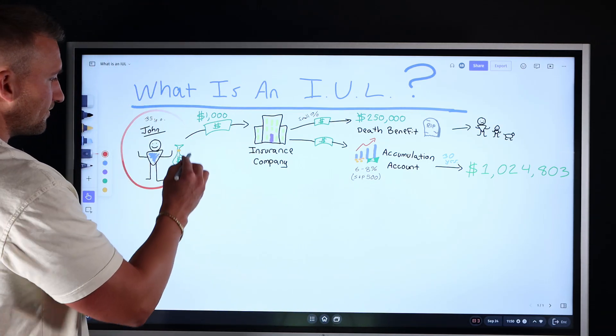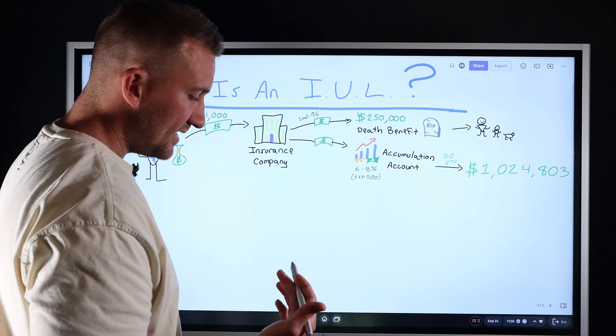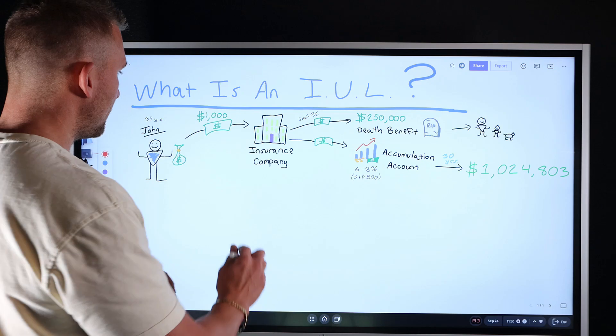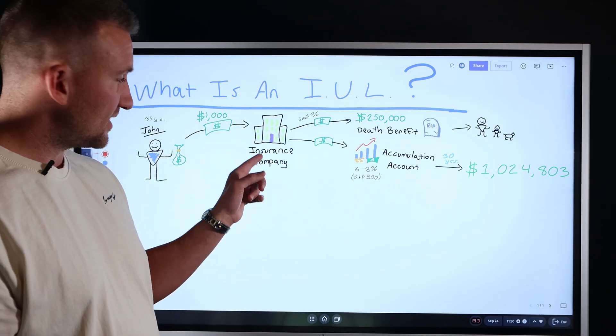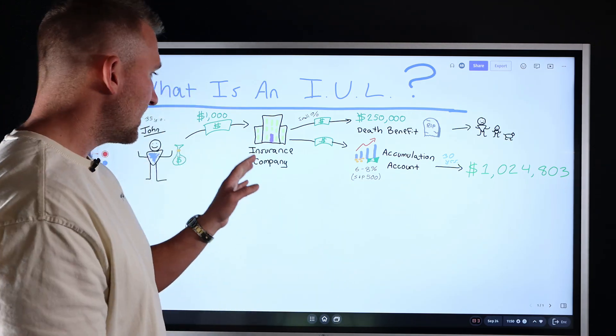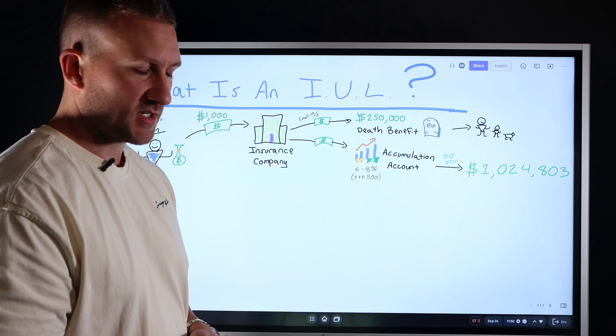John is a 35 year old healthy standard rating male. He's been seeing all over social media that he should put his funds into an IUL. So John is going to save a thousand dollars per month. He decided that that's what he wants to save to add to a supplemental retirement account for the future. This insurance company or that thousand bucks per month is a total of 12,000 bucks per year.